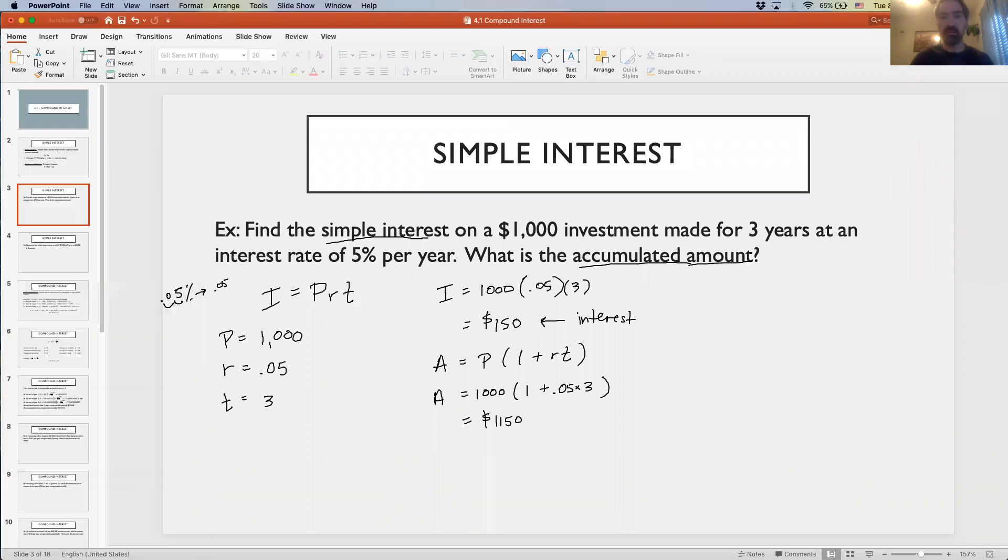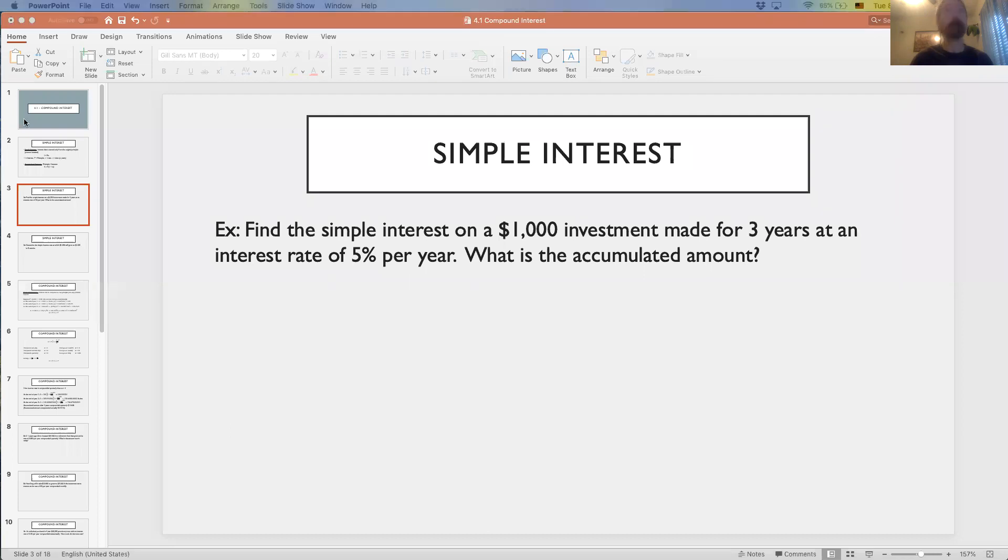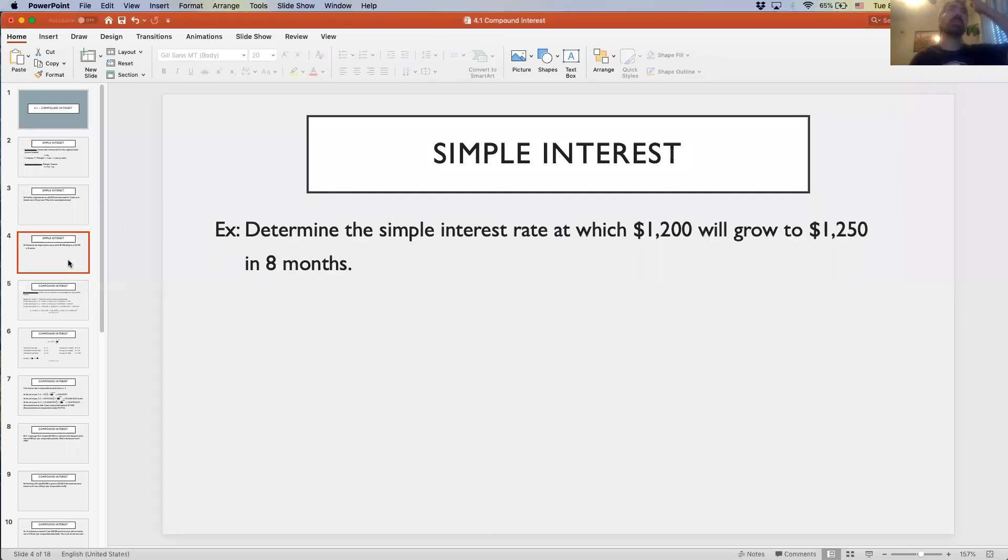Let's look at a second example here. Determine the simple interest rate at which $1,200 will grow to $1,250 in eight months. This one looks a little different. We're not just being asked to find the interest or the accumulated amount, we're being asked to find the simple interest rate - we want to find R. That means that we have to be given all of the other variables: A, P, and T.